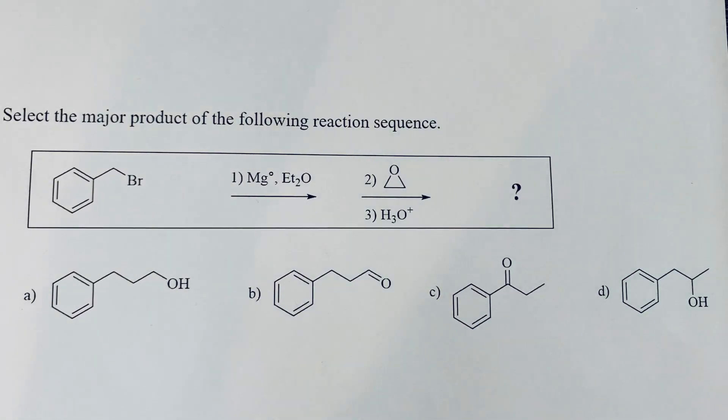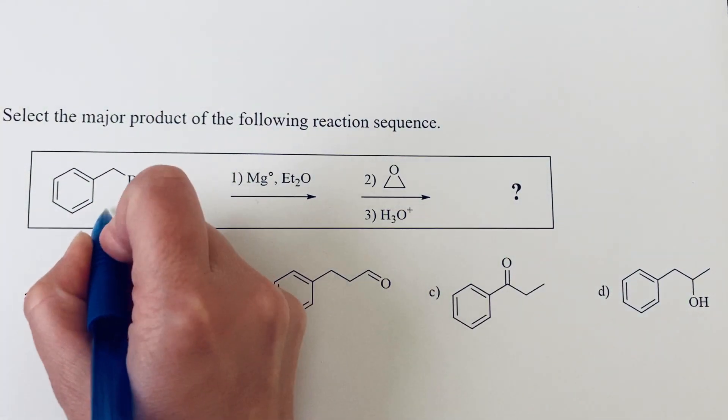Select the major product of the following reaction sequence. So if we look at what we have, we are starting with an alkyl halide.